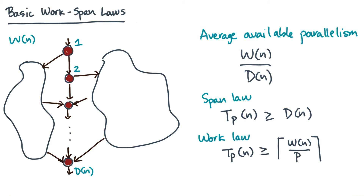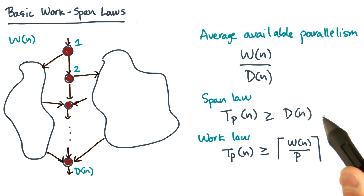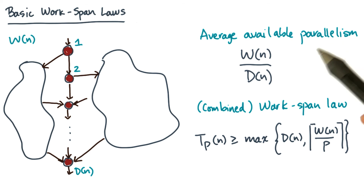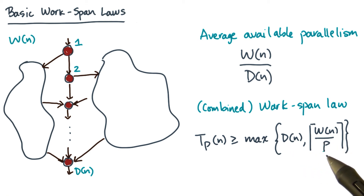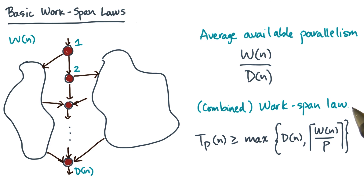Now, I have a p-sized brain. I don't like remembering all these laws, so I'm going to write this more compactly. Both laws hold, so I can combine them — the two laws have to be true simultaneously. So remember: w over d tells you the average available parallelism. And w and d together, given p, gives you a lower bound, which is this combined work-span law.